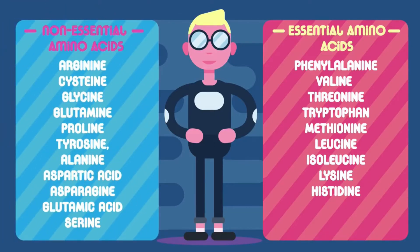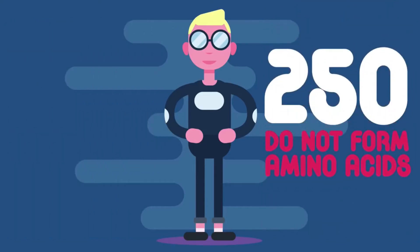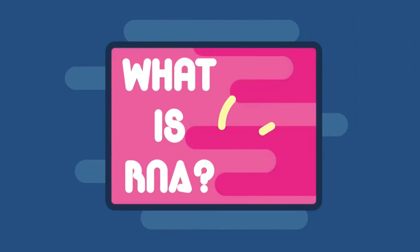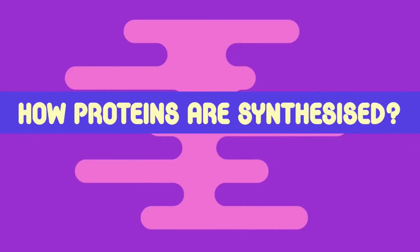Whilst 20 amino acids build up proteins, there are actually many others that do not form proteins — possibly over 250. They may form sugar, for example. Before we start, you need to know what RNA is, so you may want to watch our What is RNA video first.